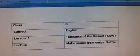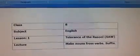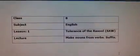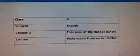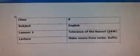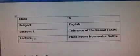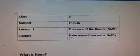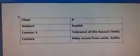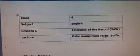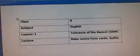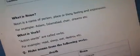Assalamu alaikum dear students, today is the first lecture of English class 8. Our topic is the tolerance of the Rasool sallallahu alayhi wa sallam. Now we are going to solve our exercise. Our first question is about how to make nouns from verbs, and the next question is about suffixes, as we have read in our previous classes.